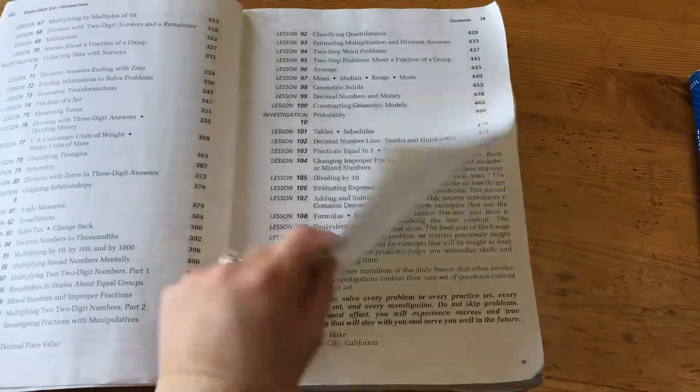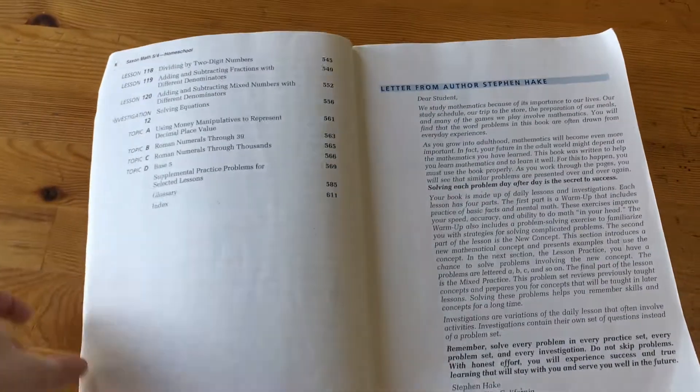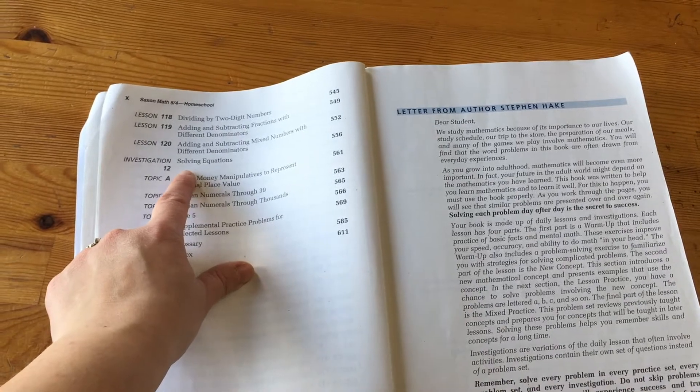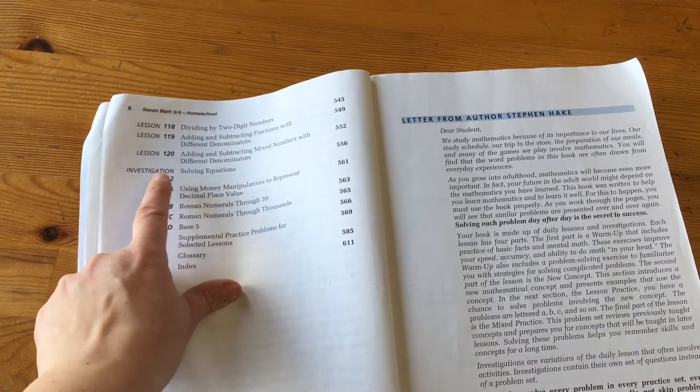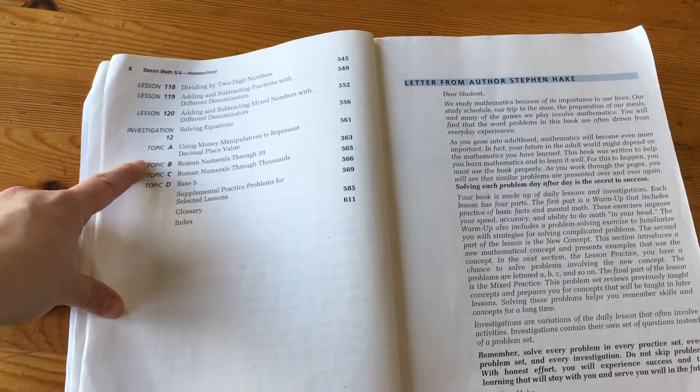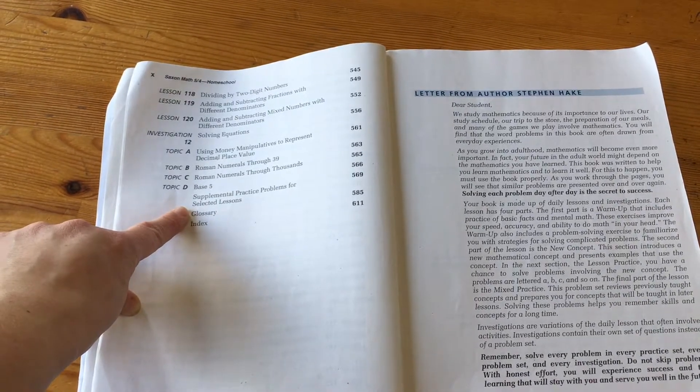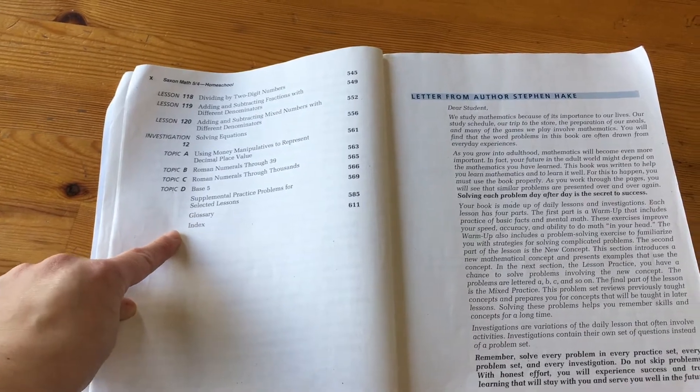So this 5-4 has 120 lessons and they have these things called investigations as well. So there are 12 investigations in there. Then they have some extra topics like Roman numerals and base 5 and then a supplementary practice section as well as a glossary and an index.